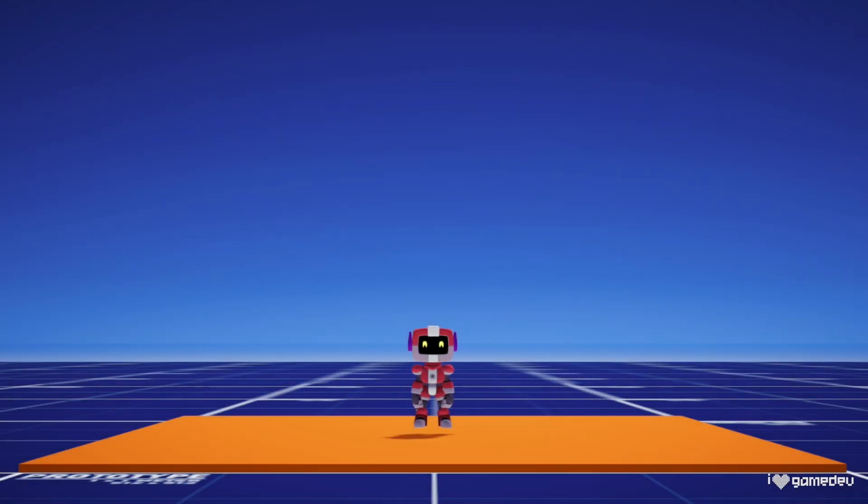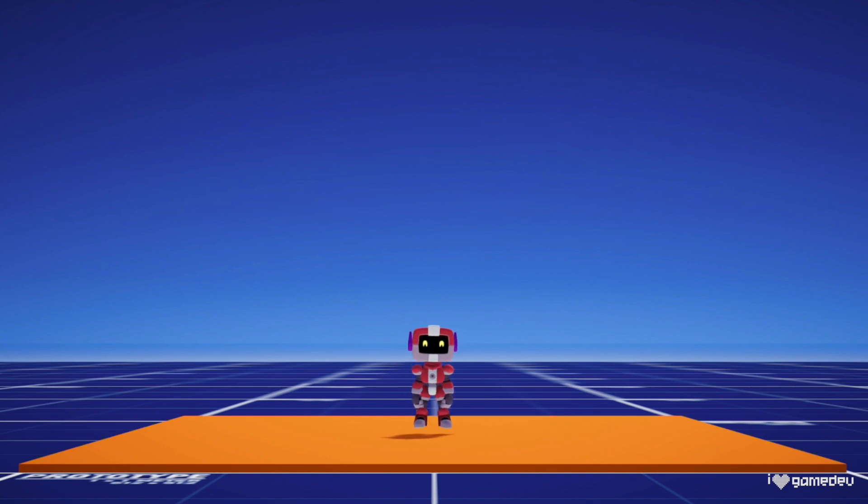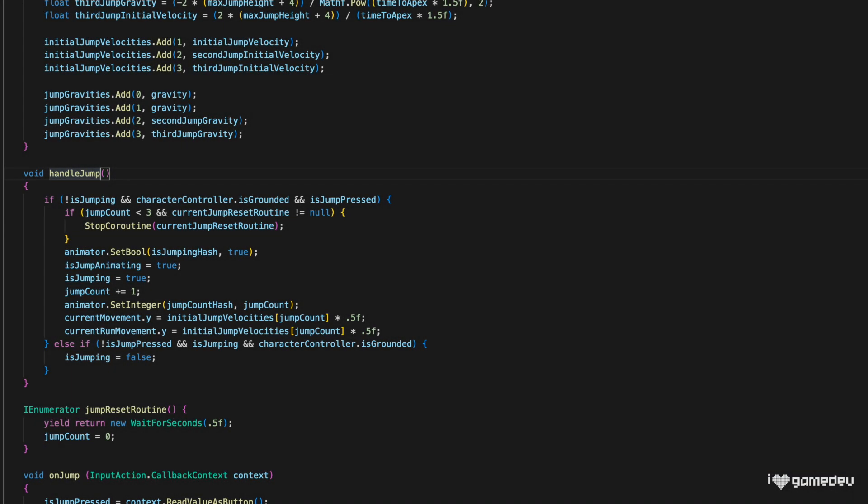Okay, entering play mode and attempting to jump, we'll notice that the jump is incredibly short. We can fix this quite easily. Looking at our handleJump function, we'll remember that we added a .5 multiplier to the initial jump velocity. This is no longer necessary because we are properly using Velocity Verlet integration.